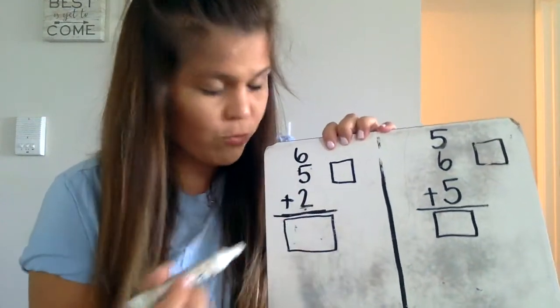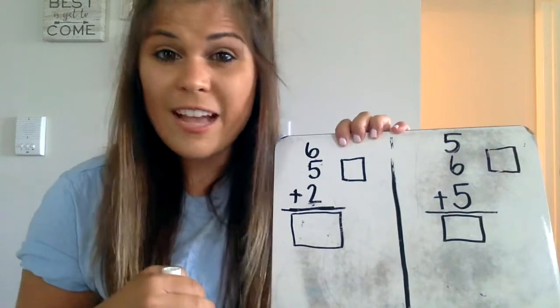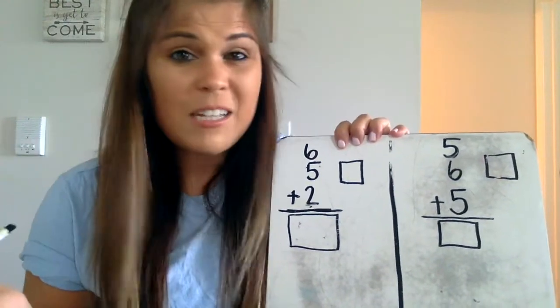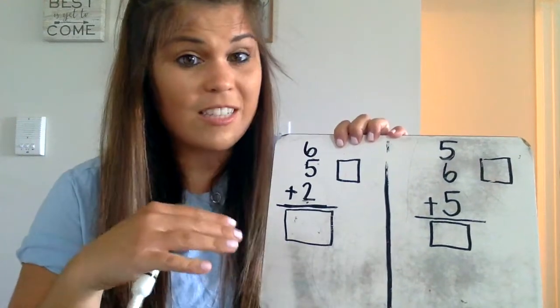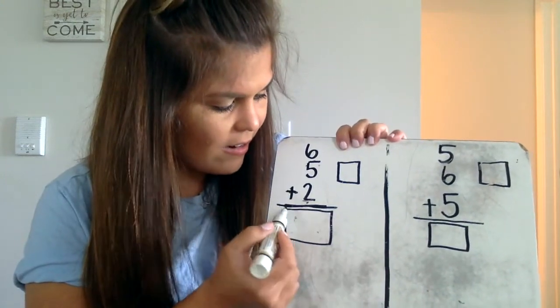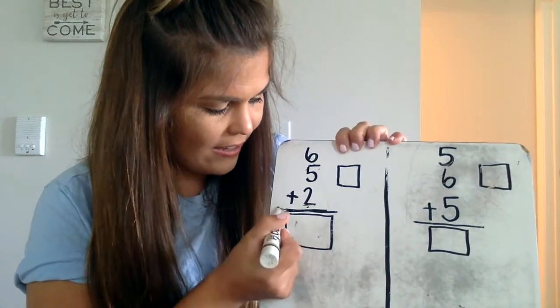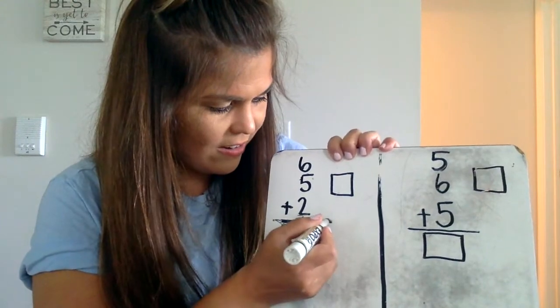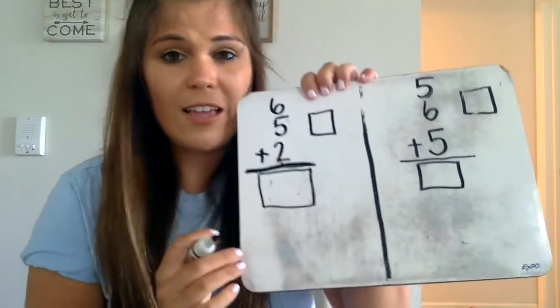Now, if I see my equation written up and down, don't let that trick you. It's the same exact thing as it being written side to side. My plus sign is here, and then I have my equal sign, which is represented by this line down here.